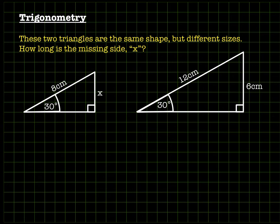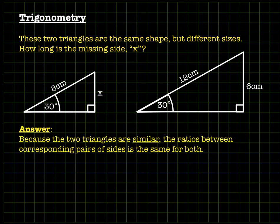The question is: how long is the missing side x? The small triangle has 30 degrees, 8 centimeters, and x. The big triangle still has 30 degrees and is still a right-angled triangle — the same basic shape — but the longest side is 12 centimeters and there's a side of 6 indicated. The key is that the two triangles are similar: they're both the same shape and have all the same angles.